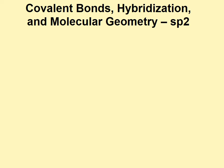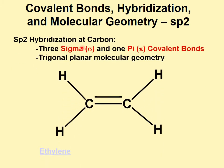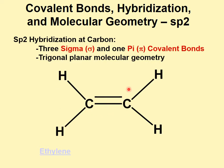Next, sp2 hybridization at carbon is represented by three sigma covalent bonds. Between any two atoms there is only one sigma covalent bond, so for this carbon we have three sigma covalent bonds, and the fourth covalent bond must be a pi covalent bond. In a pi covalent bond, the electrons are above and below the plane — not directly in between as in sigma bonds. Whenever we have sp2 hybridization, we always have a trigonal planar molecular geometry at that carbon.